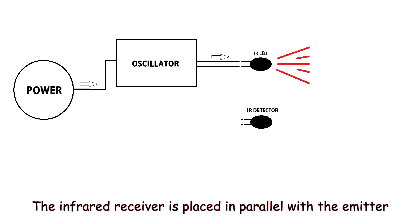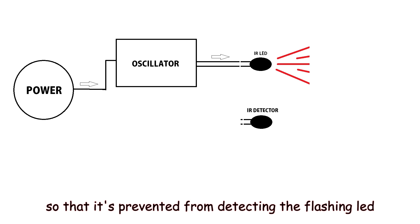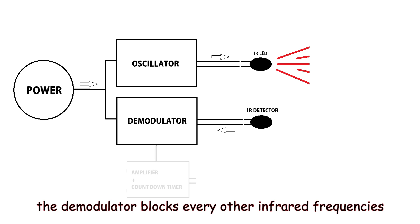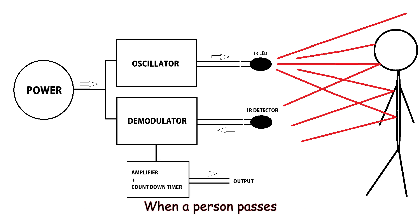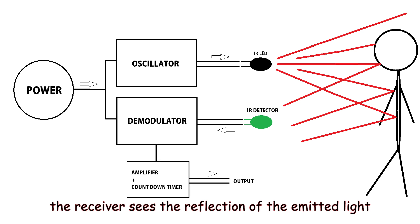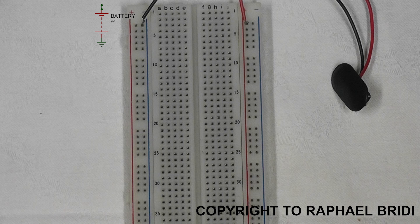The demodulator blocks every other infrared frequency to disable them from triggering the output. When a person passes, the receiver sees the reflection of the emitted light. This is how the output is triggered.